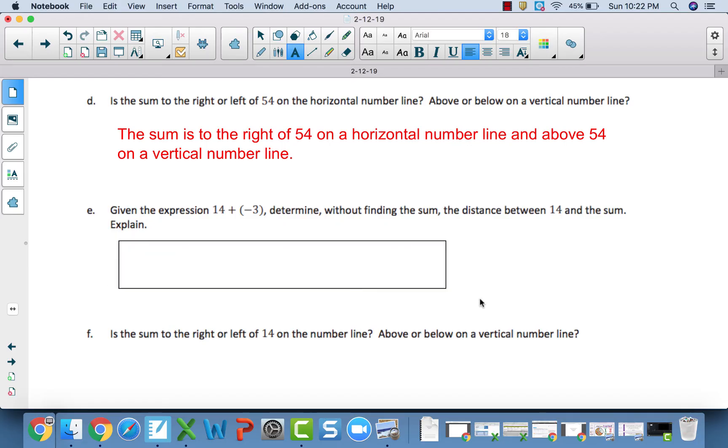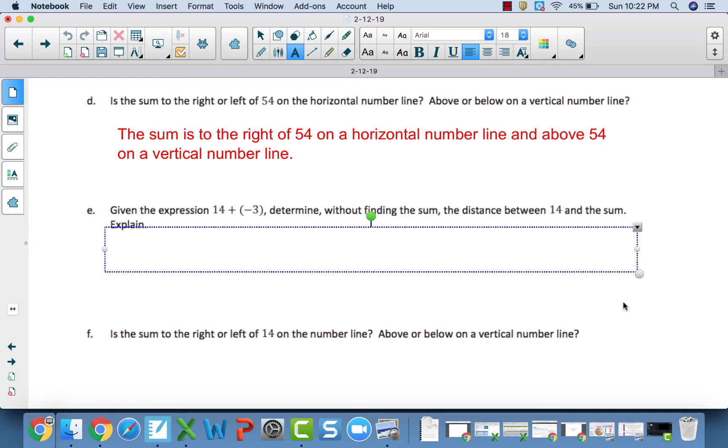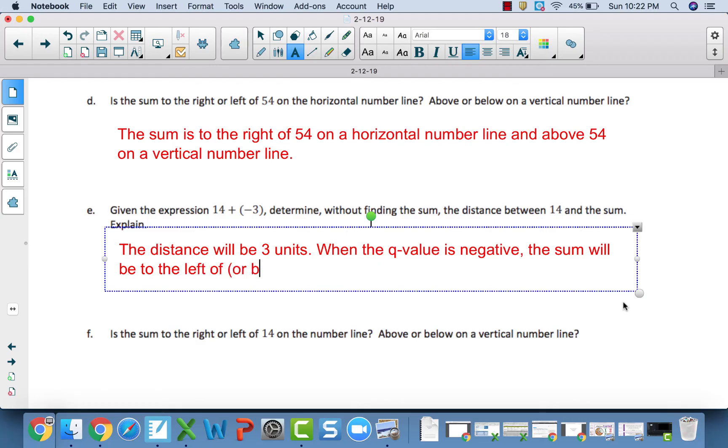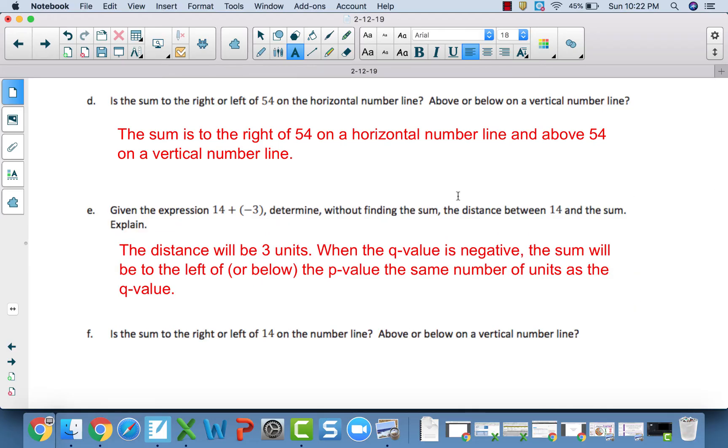Now, given this expression, 14 plus negative 3, the distance between 14 and the sum, the distance will be 3 units. When the Q value is negative, the sum will be to the left of or below the P value, the same number of units as the Q value. So, we know this value here is going to be 3 units. Our sum is going to be 3 units away from 14. But in this case, it's going to lie below 14 because our Q, our second add-in, is negative.